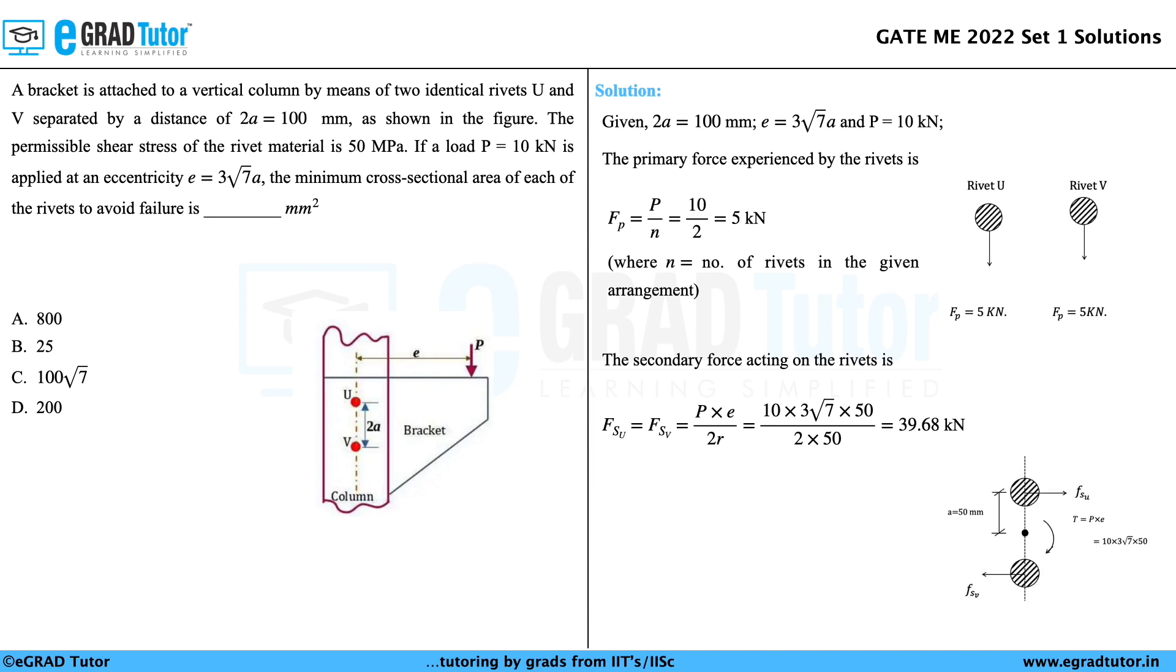It can be understood that both rivets are exactly at the same distance from the center of gravity of the rivet arrangement, and hence both rivets are critical.